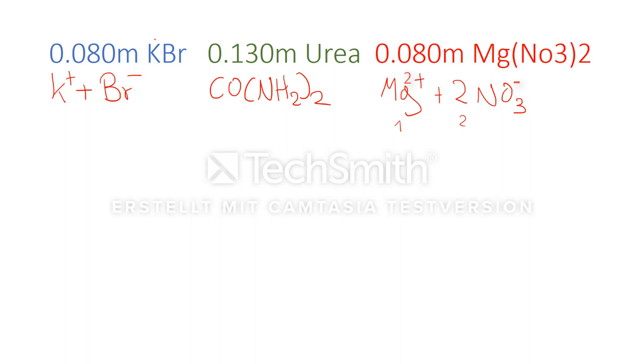If we have a look at this, out of one mole of potassium bromide, we get two moles of substance, twice the amount of particles. Out of one mole of urea, we will get one mole of urea. And out of one mole of magnesium nitrate, we will get three moles.